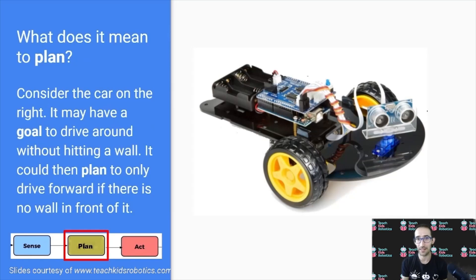What does it mean to plan? Consider the car on the right again. It may have a goal to drive around without hitting a wall. It could then plan to only drive forward if there's no wall in front of it.